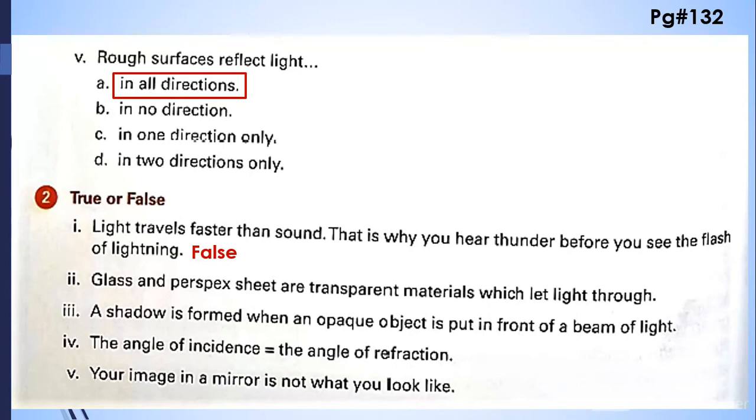Glass and perspex sheets are transparent materials which let the light through, a true statement. A shadow is formed when an opaque object is put in front of a beam of light, it's a true statement. The angle of incidence is equal to the angle of refraction, no...